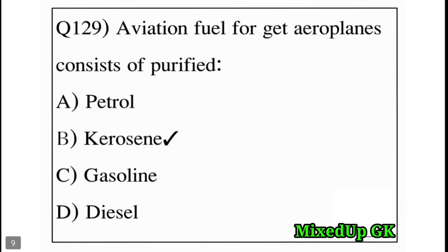Next question: aviation fuel for jet airplanes consists of purified what? Option A: petrol, Option B: kerosene, Option C: gasoline, Option D: diesel. The answer is Option B: kerosene.